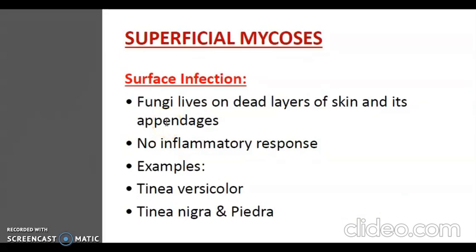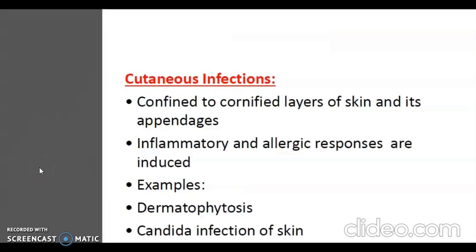In superficial mycosis, the first type is surface infection, where fungi live exclusively on the dead layers of the skin and its appendages. They have no contact with living tissue and hence elicit no inflammatory responses; the only changes produced are cosmetic effects. Examples include tinea versicolor, tinea nigra and piedra. The second type is cutaneous infection. The most important is dermatophytosis, caused by related fungi called dermatophytes. The infection is confined to the cornified layer but induces inflammatory and allergic responses. Candida also causes cutaneous skin infections.